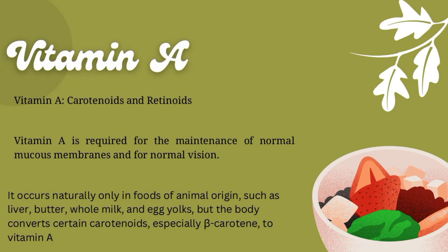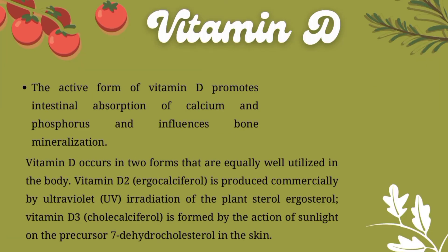The body can convert certain carotenoids, especially beta-carotene, to Vitamin A, so vegetables are also a great source of Vitamin A. Then we have Vitamin D. The active form of Vitamin D promotes intestinal absorption of calcium and phosphorus and influences bone mineralization.